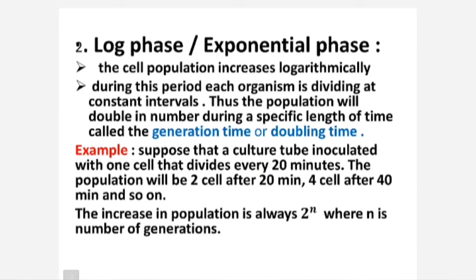The second phase is log phase, also known as exponential phase. In this phase, the cell population increases logarithmically, and during this period each organism is dividing at constant intervals. The population will double in number during a specific length of time called the generation time or doubling time. For example, if a culture tube is inoculated with one cell that divides every 20 minutes, there will be two cells after 20 minutes, four cells after 40 minutes, and so on. The increase in population is always 2 to the power n, where n is the number of generations.